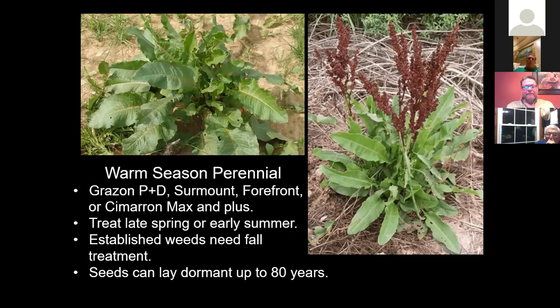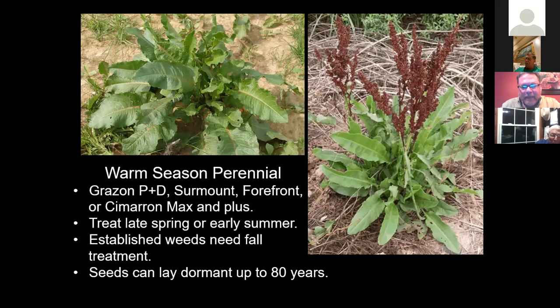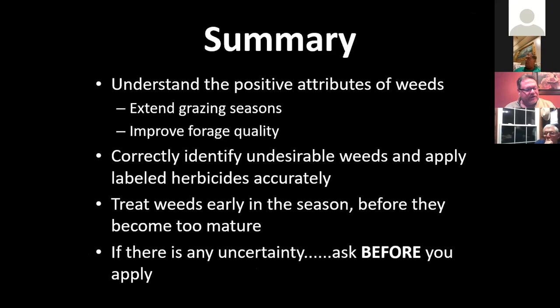Pearly dock — a warm season perennial. The seed can lay dormant for many, many years once they fall out. If the plant has mature seeds, there's nothing you can do short of digging it up. If the plant is lush and actively growing, you can get it under control with herbicides. You want to treat this weed when it's young and actively growing.